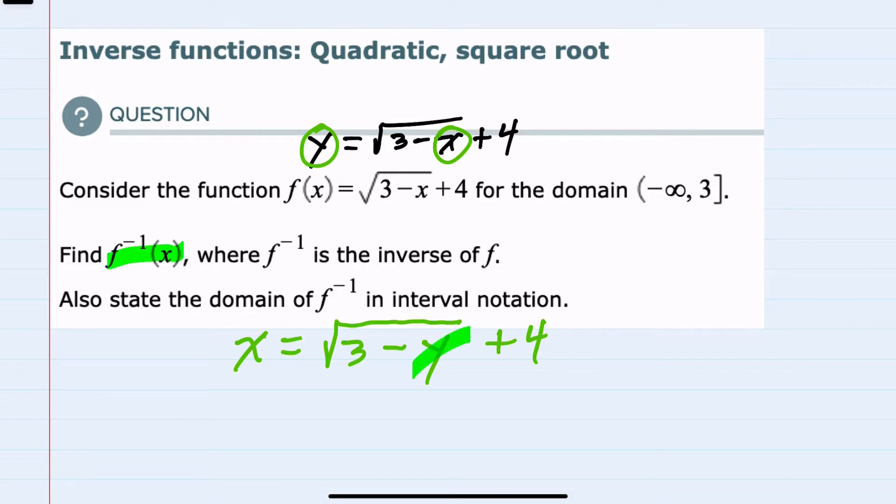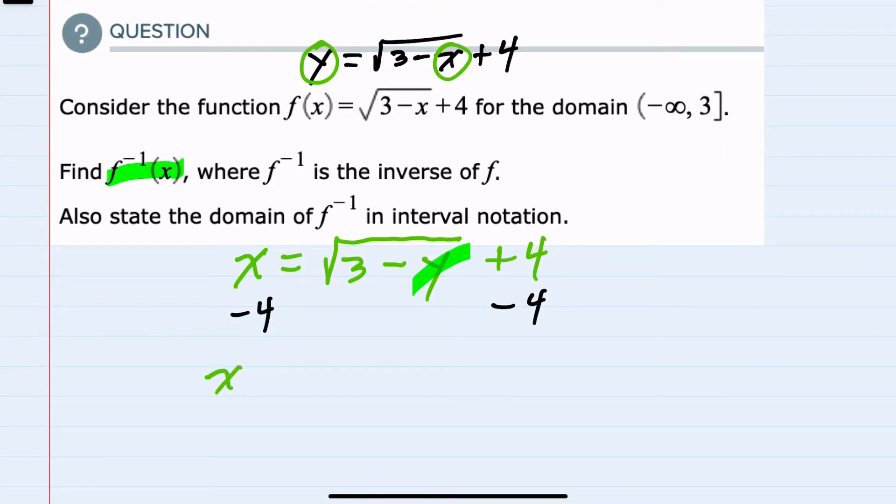So I can start that solving process by first subtracting this 4 over to the other side. That would give us on the left x minus 4 equals the square root of 3 minus y.